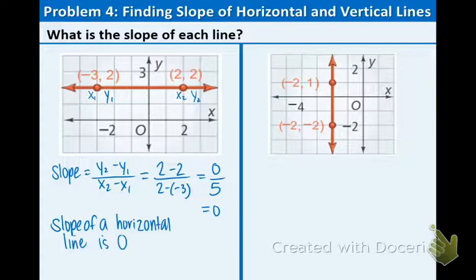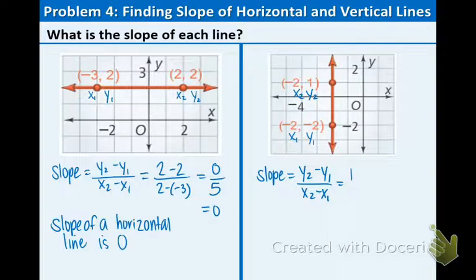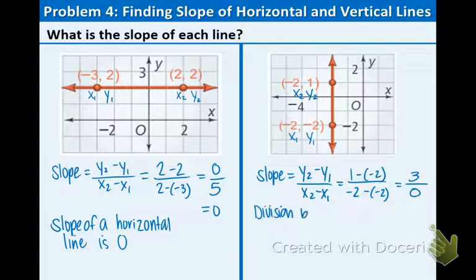Now we're on to the vertical line. Let's label (-2, -2) as x1, y1, and the other point as x2, y2. Using the same formula: (1 - (-2)) over (-2 - (-2)), which is 3 over 0. Division by 0 is undefined. If you don't believe me, check the calculator—you'll get an error. So the slope of a vertical line is always undefined.